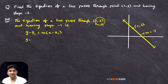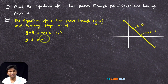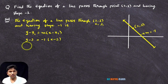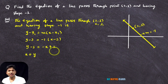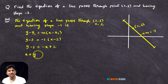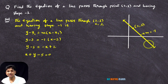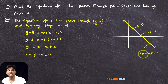y minus y1 — what is y1 here? y1 is 3 — equal to m, which is minus 1, into x minus x1 — what is x1? x1 is 2. So y minus 3 equal to minus 1 into x minus 2, which gives minus x plus 2. Take minus x to the left hand side — you get x plus y. Take plus 2 to the left hand side — then you get minus 3 minus 2, that is minus 5 equal to 0. So the equation of this line is x plus y minus 5 equal to 0.